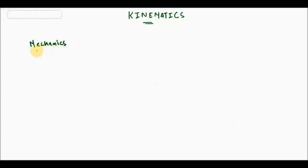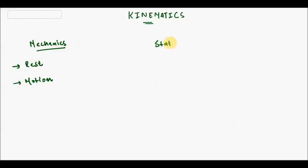Mechanics is a branch of physics in which we study objects that are either at rest or in motion. In mechanics, we study two things: rest and motion. Mechanics is divided into three branches — statics, kinematics, and dynamics.